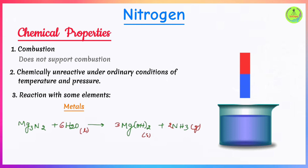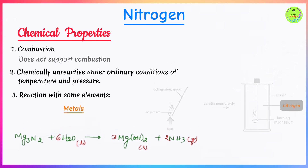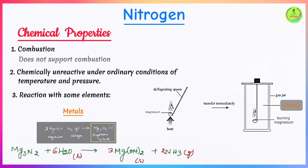The ammonia gas produced turns moist red litmus paper to blue — a key test for ammonia. The reason these metals can react with nitrogen is that the heat produced by the burning metals is strong enough to break the triple bond in the nitrogen molecules, freeing the nitrogen atoms to react and combine with the metals to form nitrides.